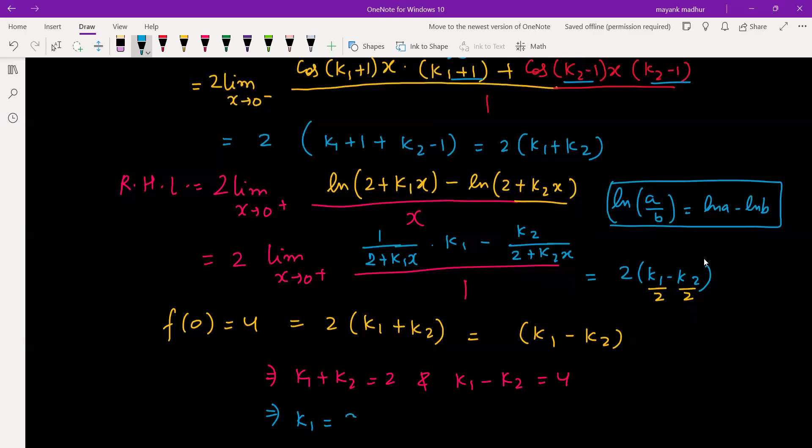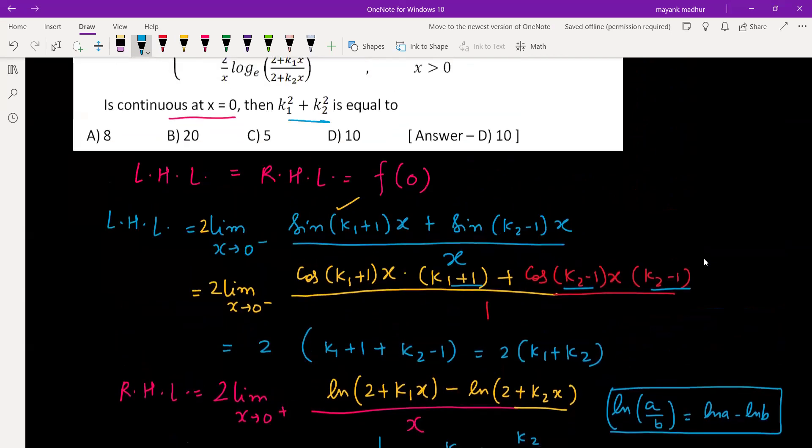What we have to find finally—we need the value of k₁² + k₂². So it will be 3² + (-1)² which will be 10, and yes that is the answer.